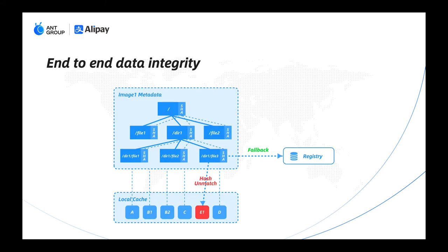Nydus also implements end-to-end data integrity validation. When the local cache data chunk is broken — perhaps because someone hacked the machine or local storage data got corrupted — Nydus can detect it by checking the data digest and fall back to the remote storage backend to fetch the data, and then rewrite it to the local cache.